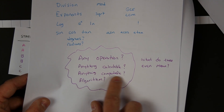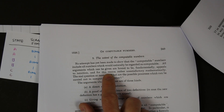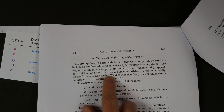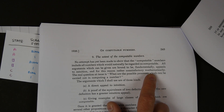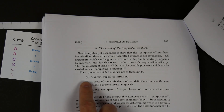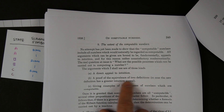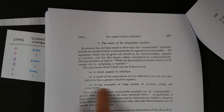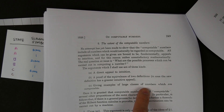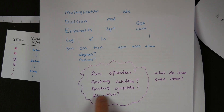This still leads us back to the same question: what do we mean by 'anything computable'? Even Turing admits there really isn't a good answer. Later in the paper he says, 'all arguments which can be given are bound to be fundamentally appeals to intuition, and for this reason rather unsatisfactory mathematically.' He's pretty honest that there really isn't any good definition of exactly everything a general-purpose computer ought to be able to do, and his arguments are kind of a direct appeal to intuition.